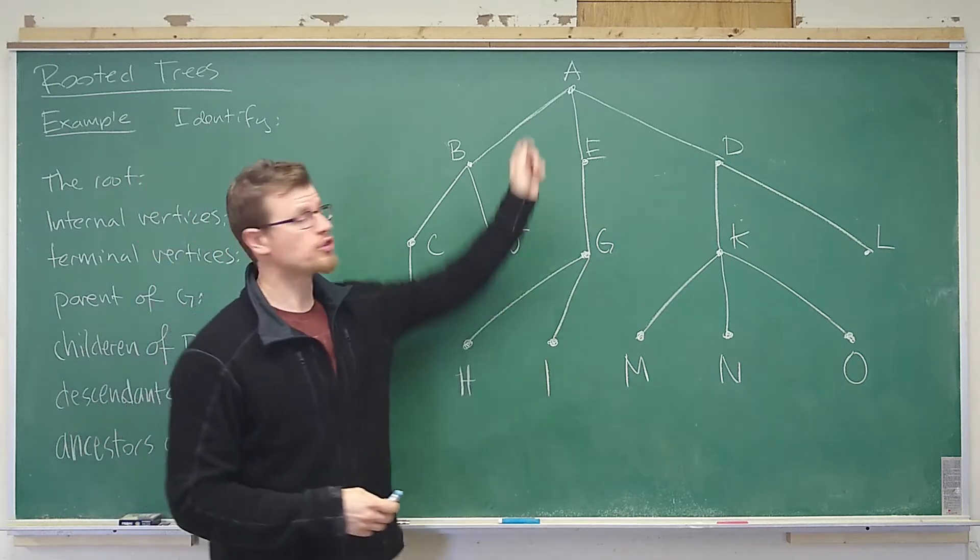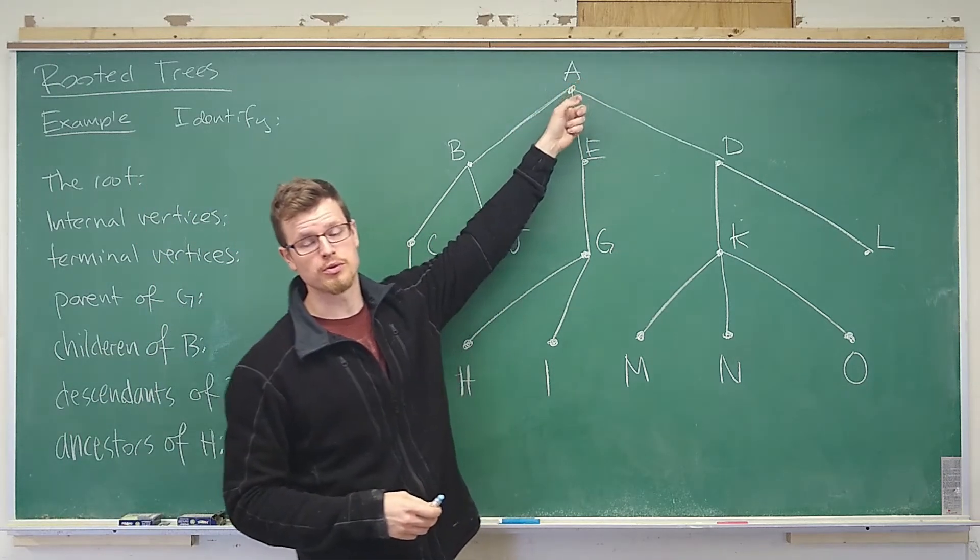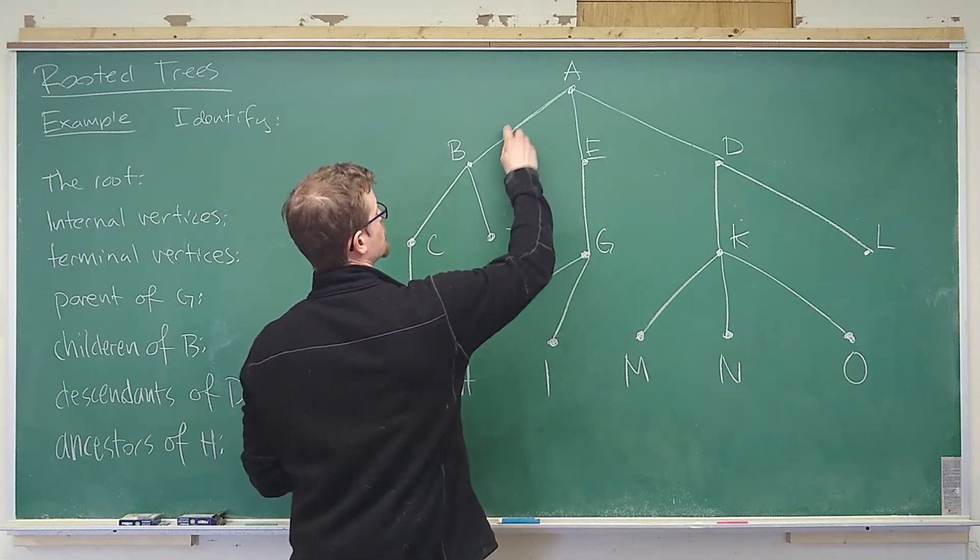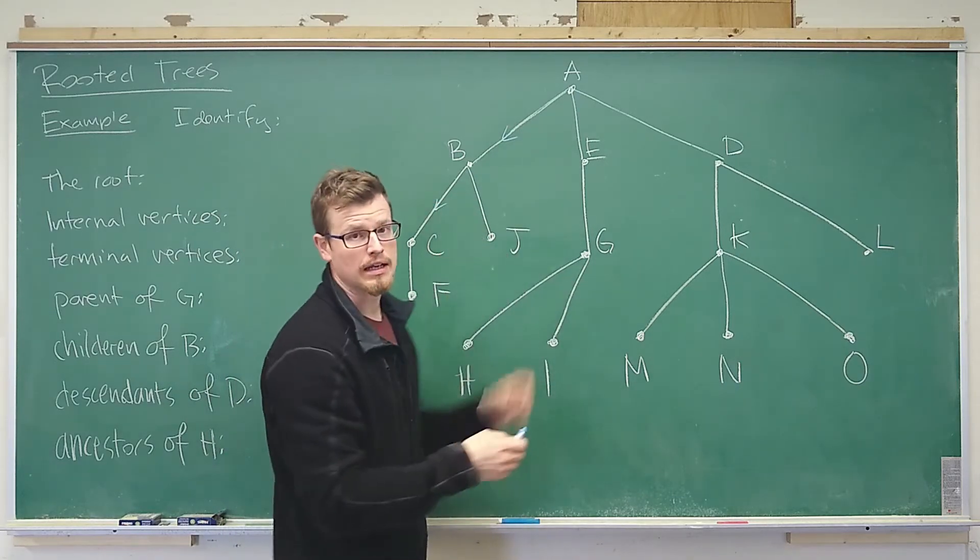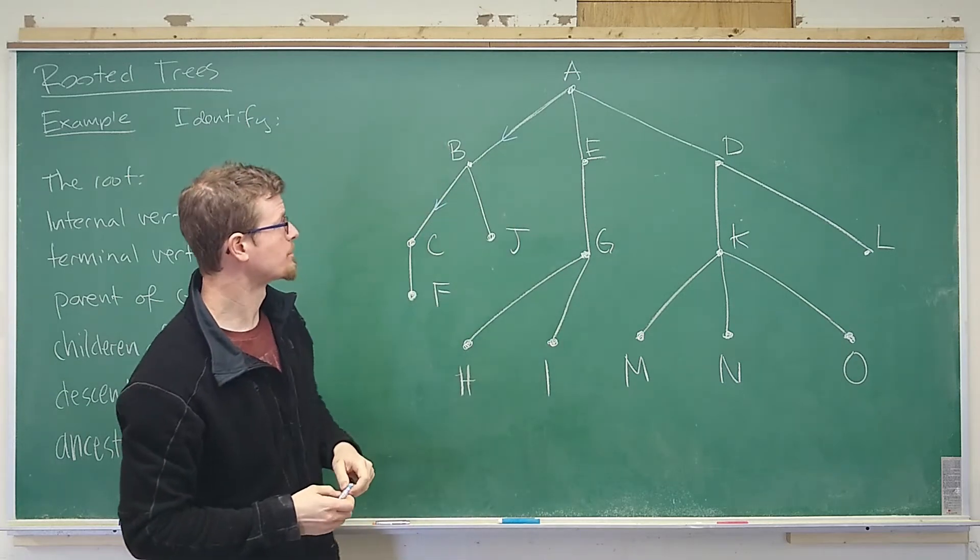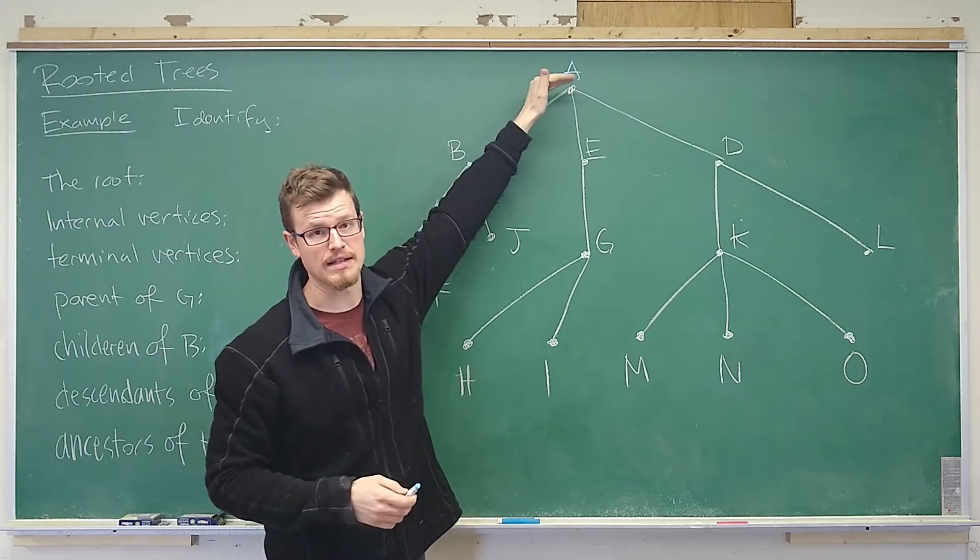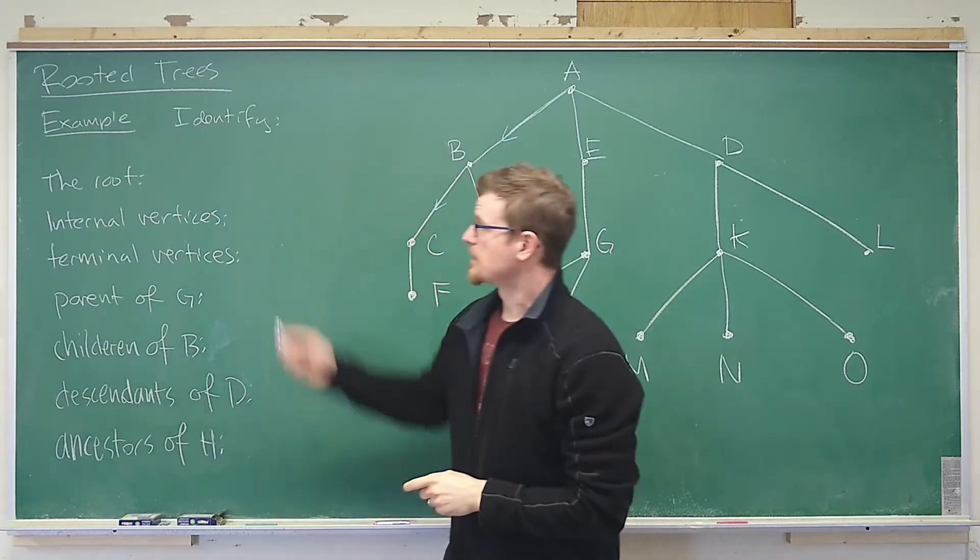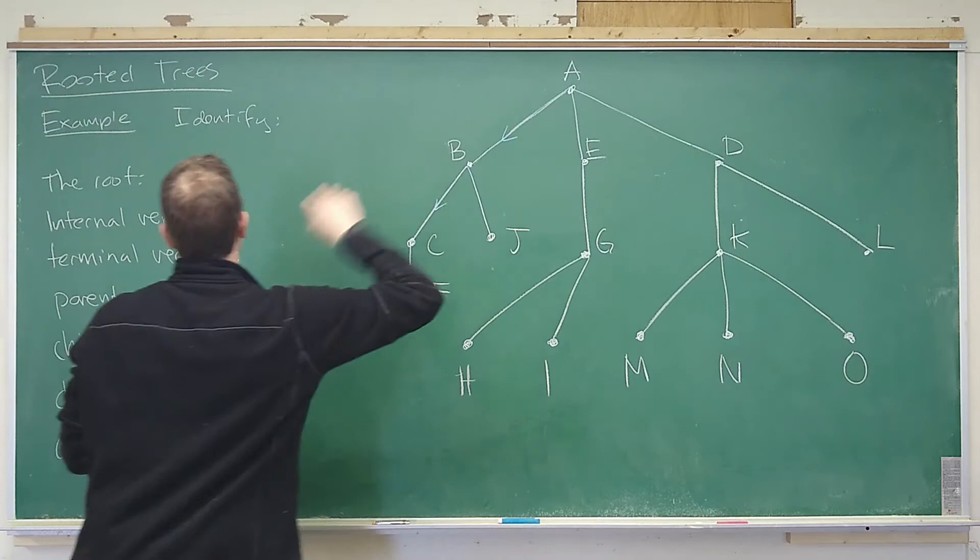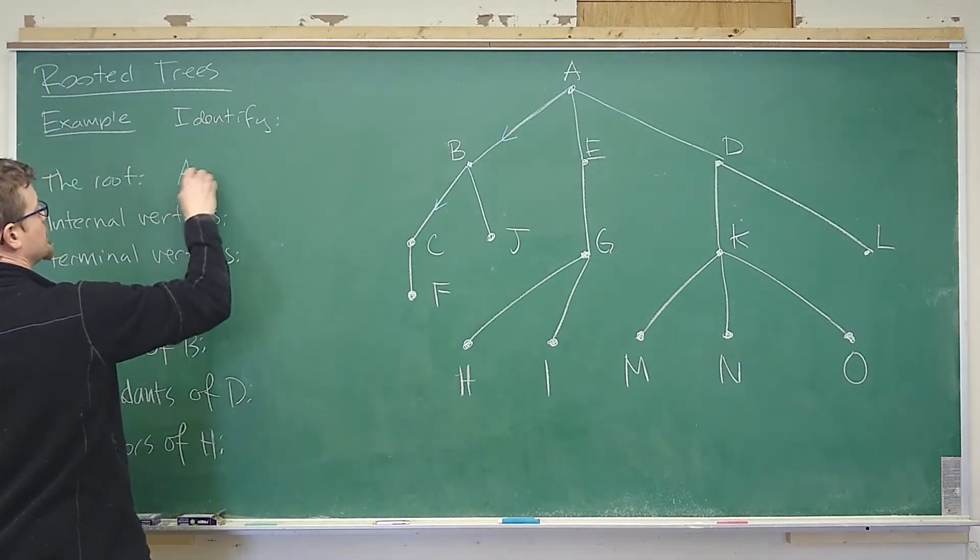That's because it's assumed that you're traveling from the root to every other vertex so the direction would be indicated by how you would get to each vertex from the root where the root is given at the top. So that identifies for us the root in this case the top vertex is a.